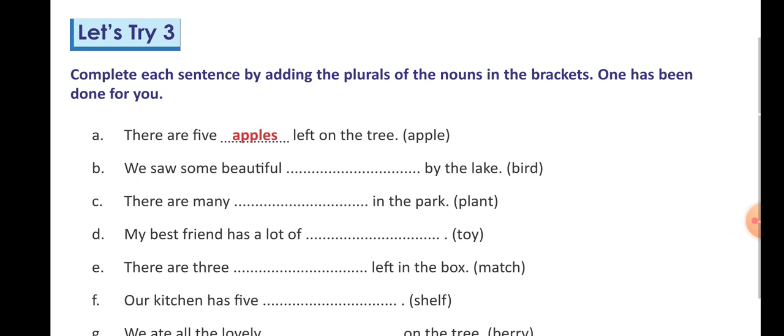D number: my best friend has a lot of toys, T-O-Y-S. According to rule, when there is Y in the end of the word, we remove Y and add I-E-S. But the second rule is if there is a vowel before Y, then we add S to make it plural. So here you will write toys, T-O-Y-S.